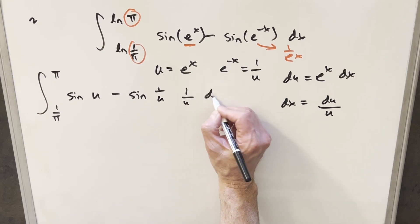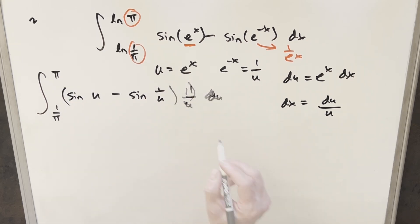Actually, let's write this as 1 over u du. But now that we have this case, we have like 1 over u here and here, u there, and then we have reciprocals on the bounds. We're going to do another substitution.